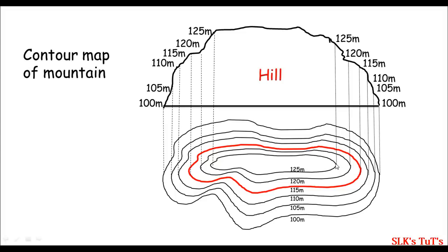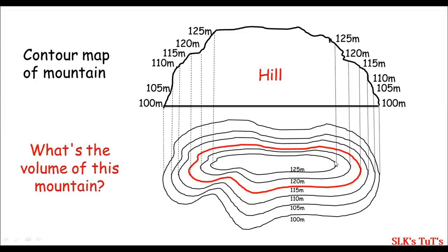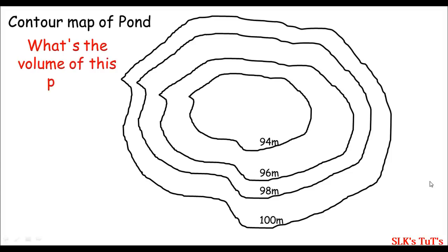If this is the contour map of a mountain, then what's the volume of this mountain? It's a big question. Or if this is the contour map of a pond, then what will be the volume of water in this pond?